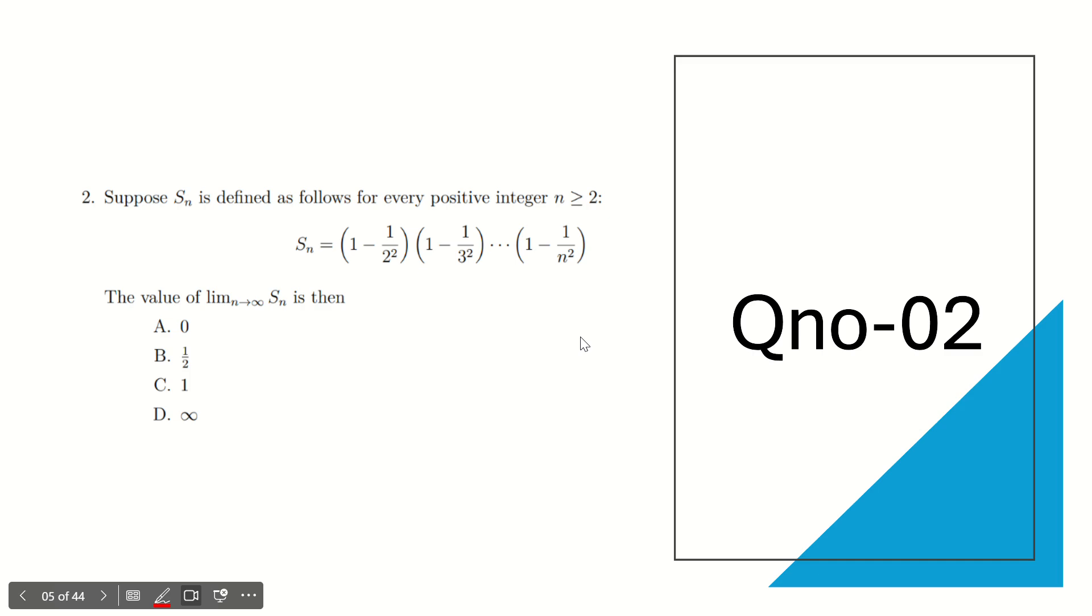Guys, observe that this S_n can be written in a general format. S_n equals the product from k=2 to n of (1 - 1/k²). This is the product sign, so we have the product of 1 - 1/k² where k starts from 2 and goes to n.